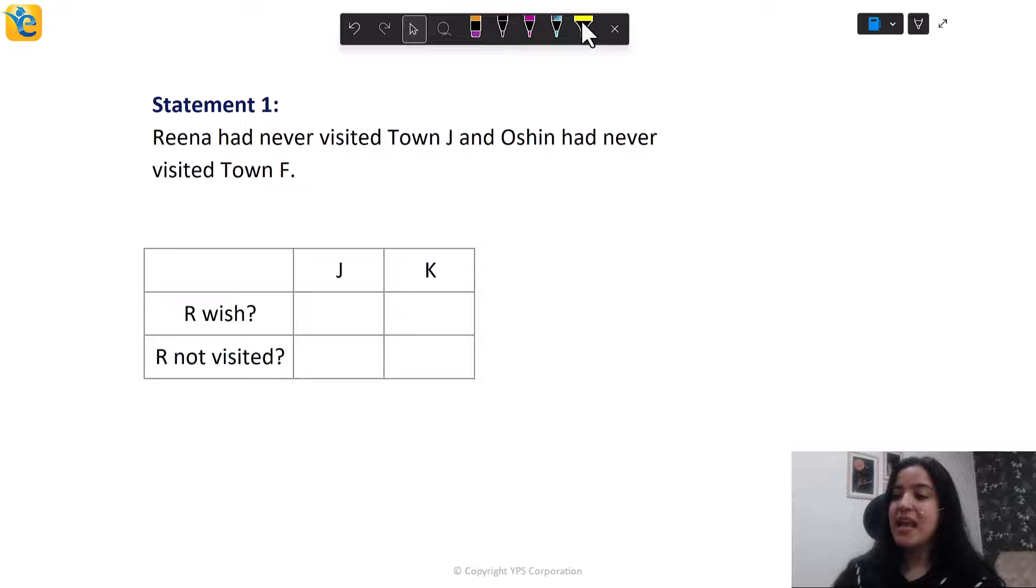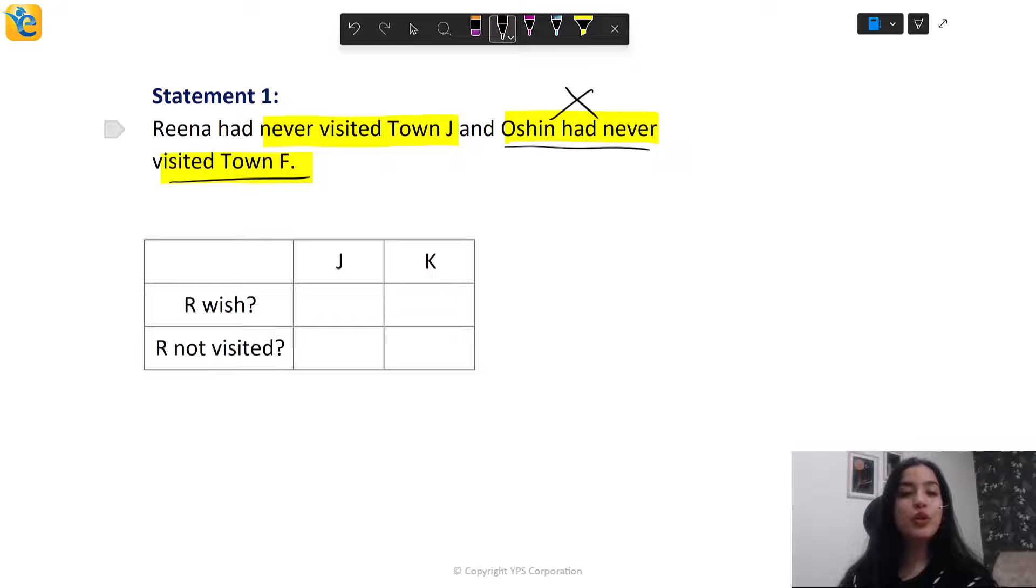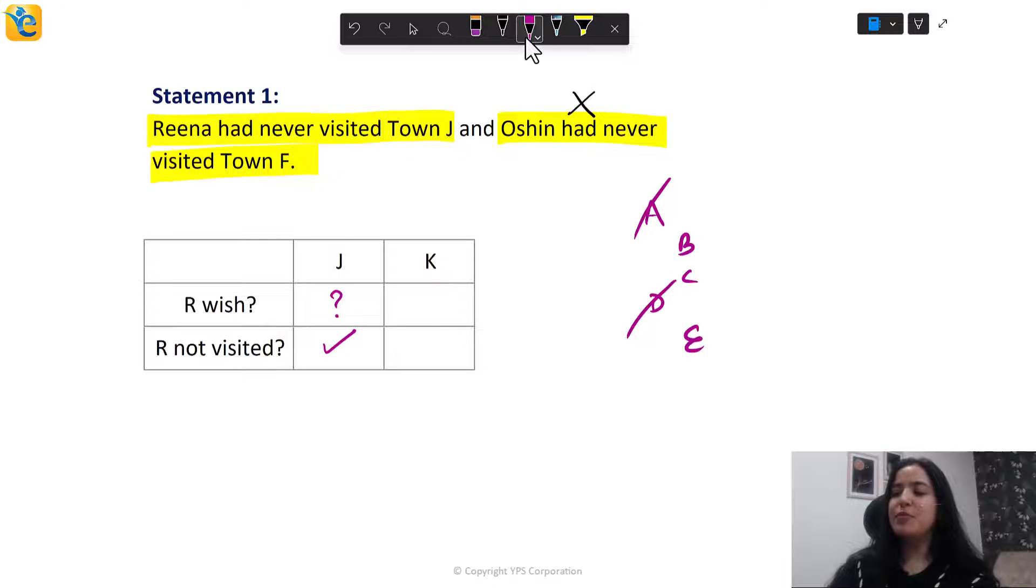Let's read. This statement tells us that Rina had never visited J. Ocean had never visited F. Town F is not even in the running anymore. We had rejected Town F earlier only. That means this piece of information is of no use to me. We only see that Rina had never visited Town J. Which means I have a yes to this question. Rina not visited. But what about the wish? Do I have that? No. So I put a question mark here. I still have no information. This was a very interesting statement because you see how only one part of the statement, first of all, was beneficial for our assessment. The rest of it, the second part, was not even needed. This actually shows the power of careful analysis and drawing inferences at optimum points in the solution. Thus, this statement is not sufficient because it did not give me everything I wanted, which means A and D are rejected.